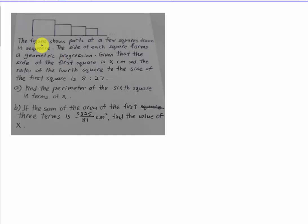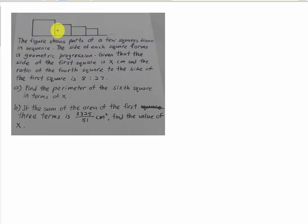The question says the figures show parts of a few squares drawn in a sequence. The sides of each square form a Geometric Progression, meaning their sides actually will form a Geometric Progression. Given that the side of the first square is x, so we have some information — a actually equals to x.